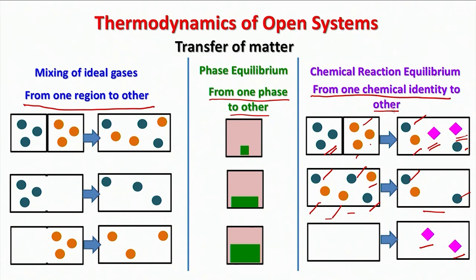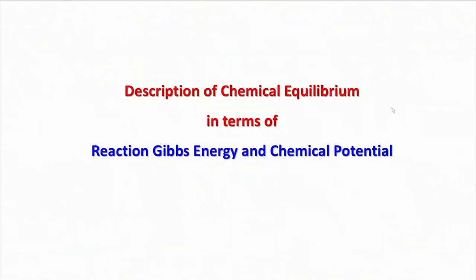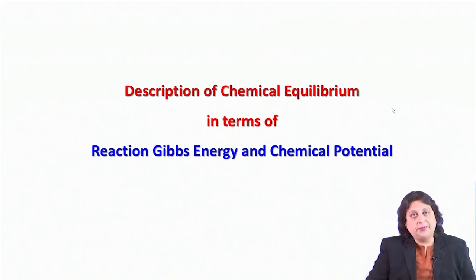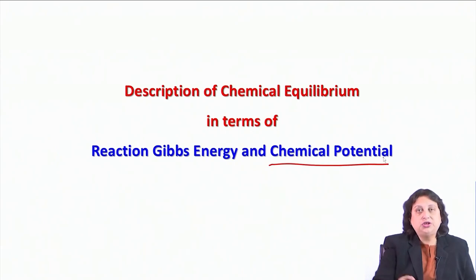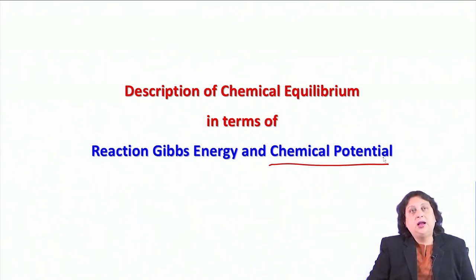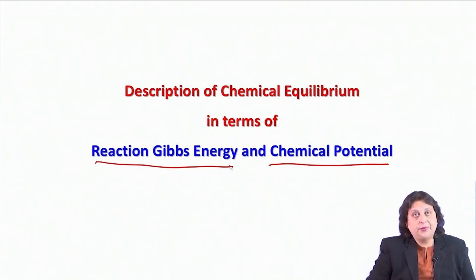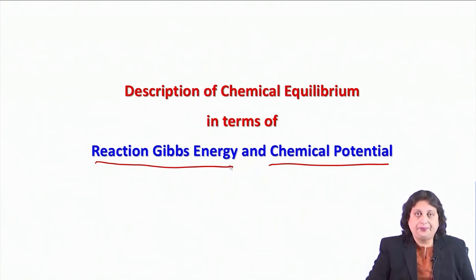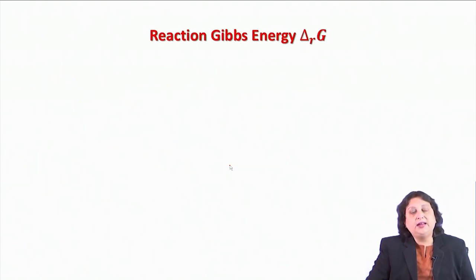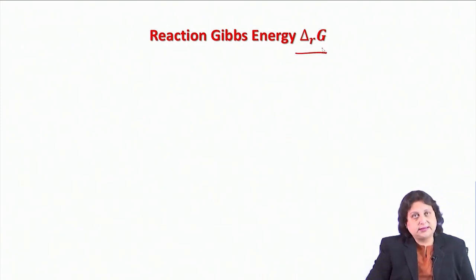The second factor is the mixing of these different chemical species in the final reaction mixture at equilibrium. With this picture in mind, let us now derive a description of chemical equilibrium in terms of chemical potential and show how we develop a single thermodynamic quantity called reaction Gibbs energy to describe the direction of spontaneity of a chemical reaction and the condition of equilibrium. Let me start by defining the reaction Gibbs energy, which is given a symbol like this.